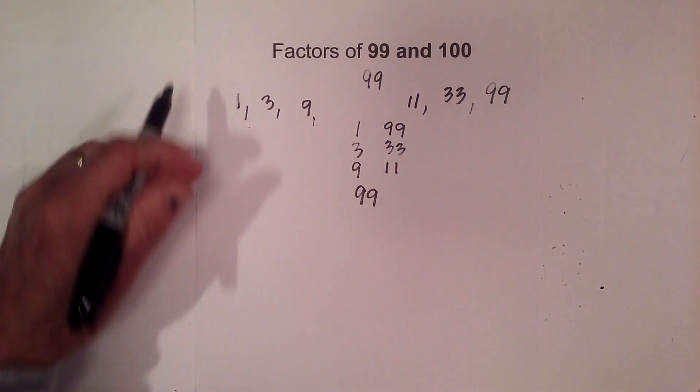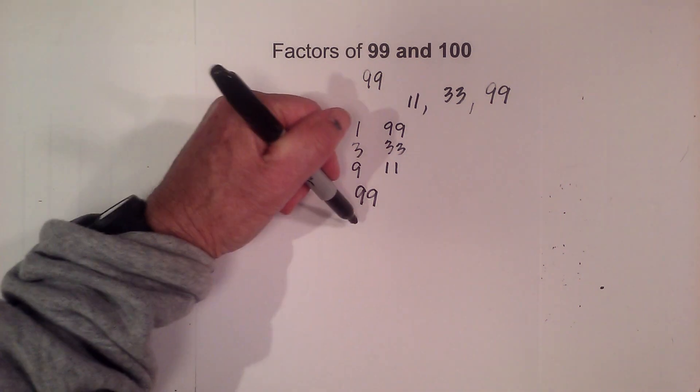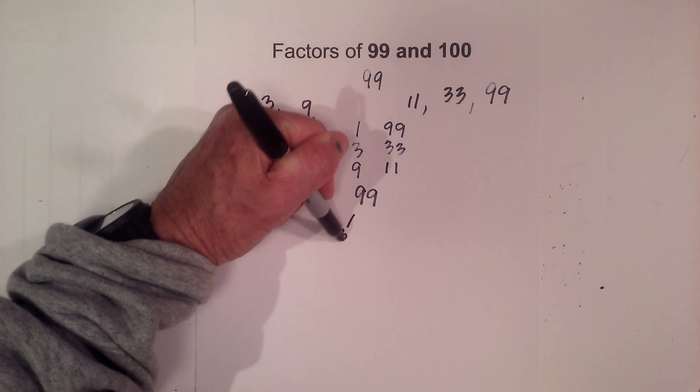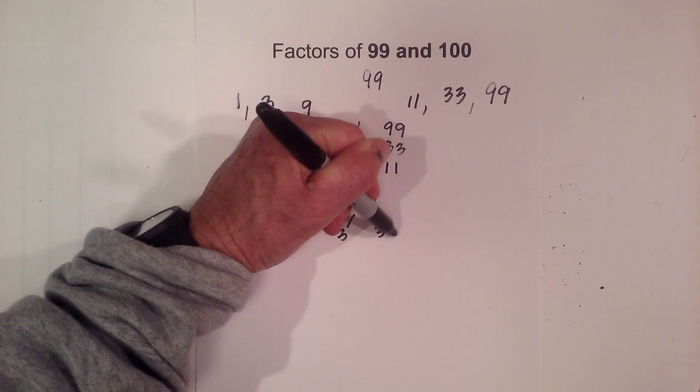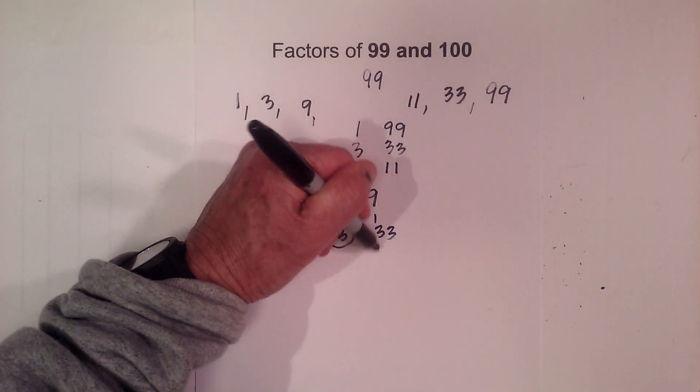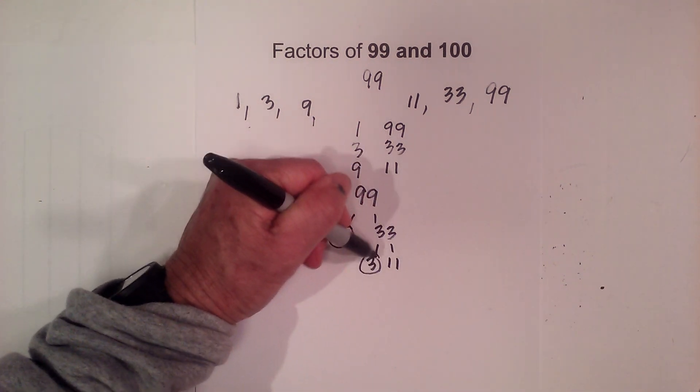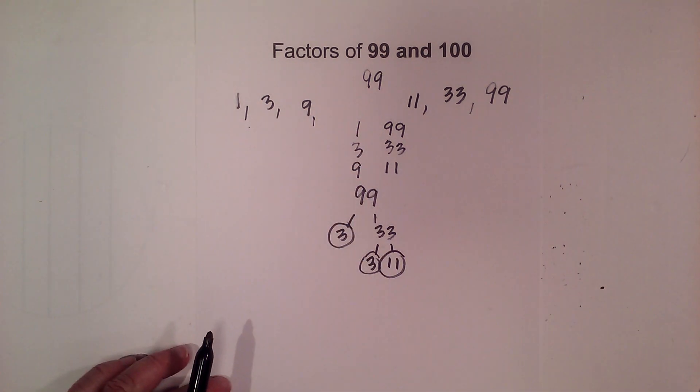And the factor tree goes like this. I know that 3 times 33 equals 99, circle the 3 because it is prime. And then now 3 times 11 equals 33, circle both of them because they're both prime.